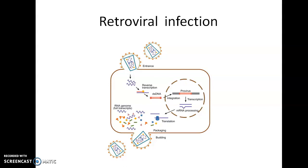Retroviruses are infectious and must be modified to be suitable for introducing therapeutic genes. A common provirus DNA construct is made by deleting viral genes from the provirus. The most important consideration when using a retrovirus is that it should be non-pathogenic, while still retaining all the proteins and enzymes necessary for replication.